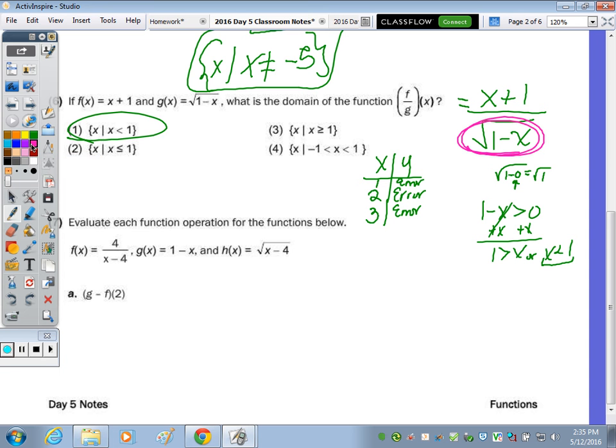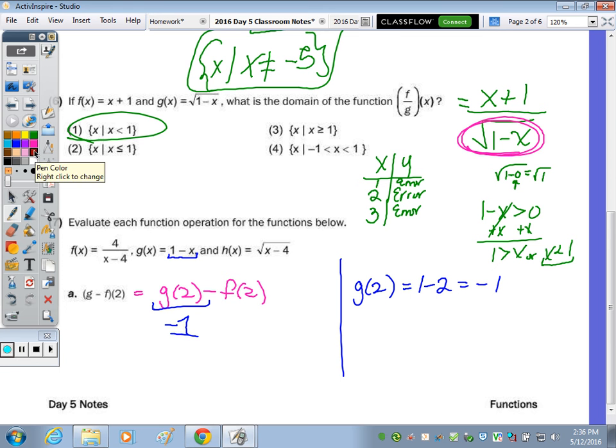So what we do here is we do G of 2 and subtract F of 2. So you might have, or you have to find G of 2 first. So off to the side, G of 2, the G function is 1 minus X. 1 minus 2 is negative 1. So I replace the G of 2 with negative 1.